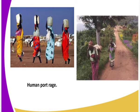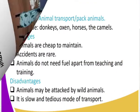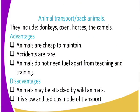In traditional forms of transport, apart from human porterage, we also had animal transport. Animals used for transport are also called pack animals. Pack animals included camels, donkeys, elephants, and dogs. Yes, dogs can carry goods — don't be surprised. Those were some of the pack animals.